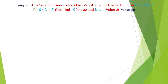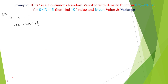A continuous random variable has the probability density function f(x) = x/6 + k, with limits from 0 to 3. Find k, the mean value, and variance. First, we calculate the k value. We know that the probability density function always integrates to 1.